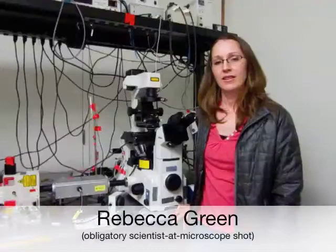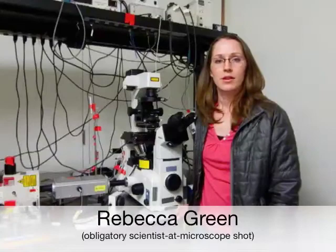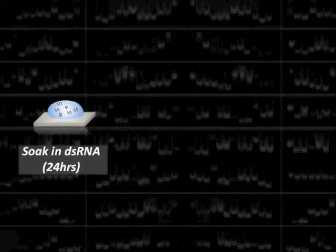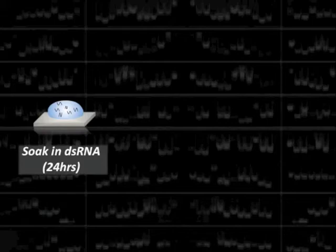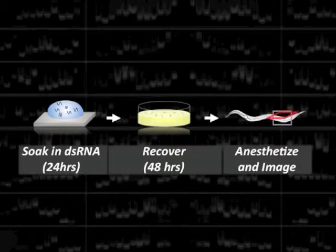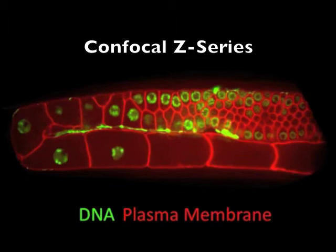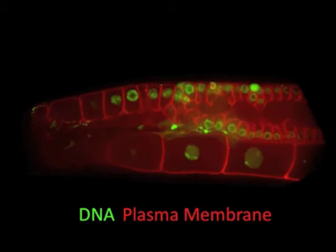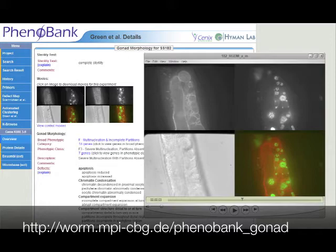Gonad architecture depends on the coordination of a broad spectrum of basic cellular processes, making it an ideal substrate for phenotypic profiling. For the screen, worms were soaked in RNA corresponding to the target gene, allowed to recover on food for 48 hours, and anesthetized for imaging. For each worm, we collected a confocal Z-series of the gonad. The strains used expressed fluorescent markers localizing to the plasma membrane and chromosomes, allowing visualization of cell boundaries within the tissue. All movies and data files are available at Phenobank. We collected gonad images for 554 essential genes, which gave a broad spectrum of phenotypes, and sorting these to group similar phenotypes also grouped genes with similar functions.